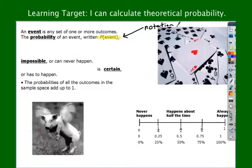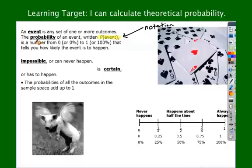So if I say the probability of rolling a 6, I would write P parentheses 6 equals 1 out of 6. The probability of an event is a number from 0 to 1, or 0% to 100% — 0 and 1 being the ratio form.